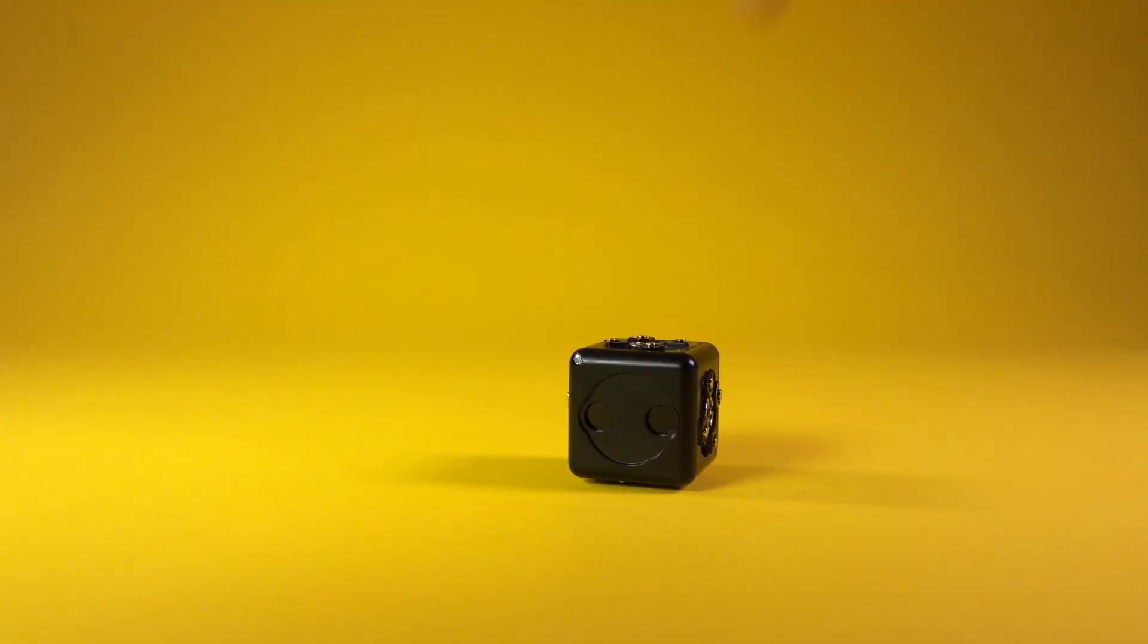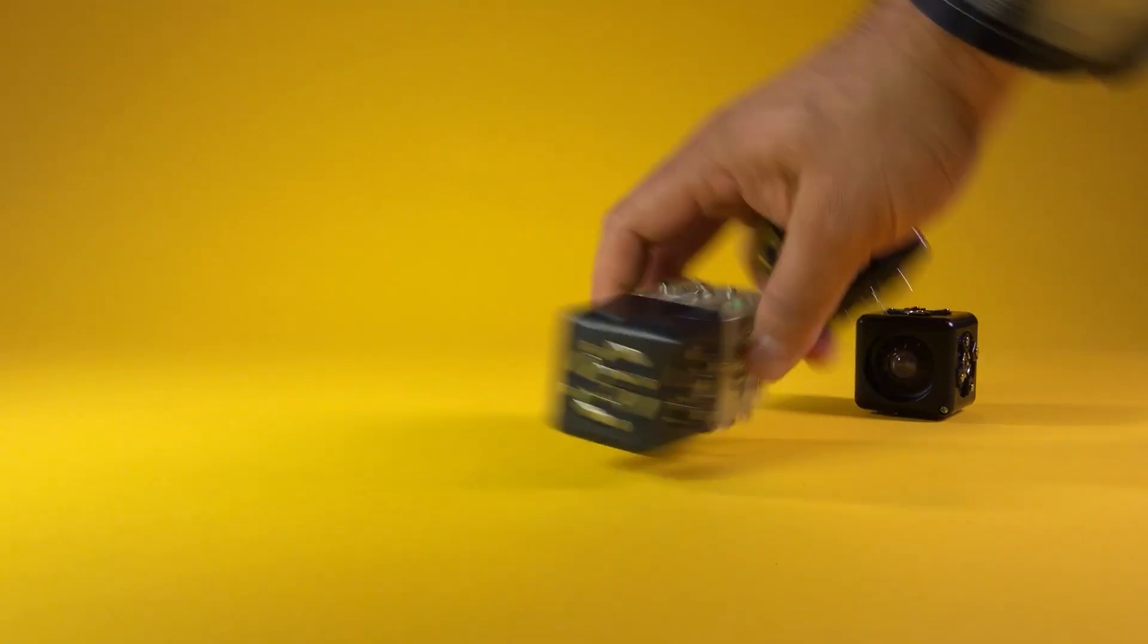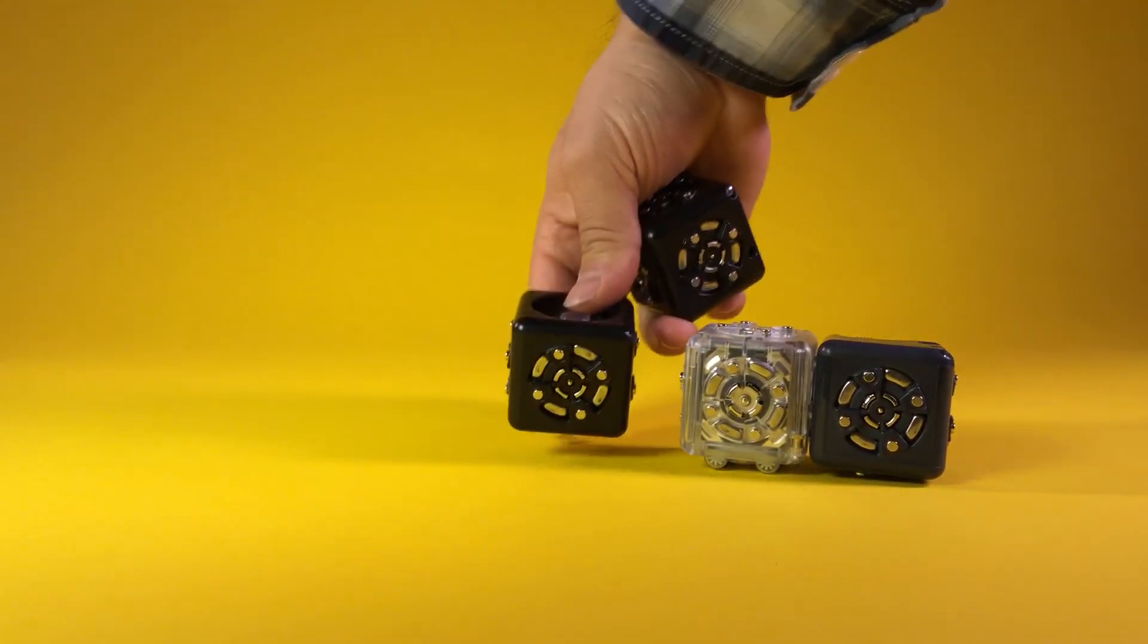Number 5. Cubelets are modular, which means that you can exchange blocks of the same type within a construction. For example, we can exchange any act cubelet for any other act cubelet or any sense cubelet for any other sense cubelet. If we have a robot that moves when it detects an object, we can swap the distance sensor for the brightness sensor to create a robot that moves when it detects light.